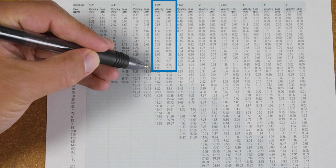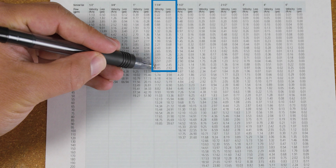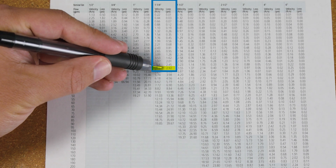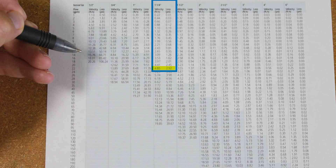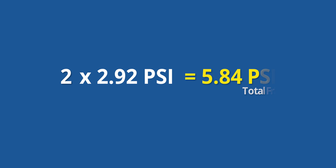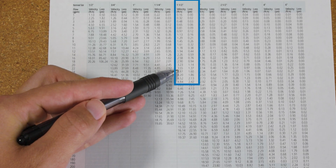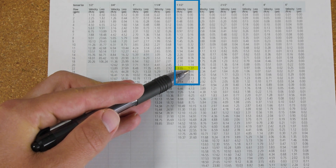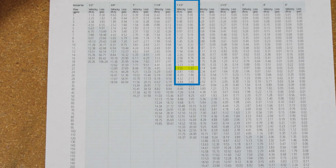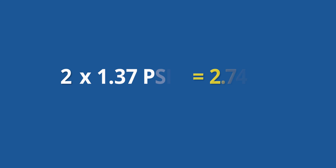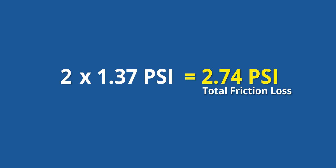For our sample system, the smallest pipe size we could use is one and one quarter inches — where the velocity is at 4.85 feet per second and the friction loss is 2.92 psi for every 100 feet of pipe. Our sample system uses 200 feet of pipe, meaning our total friction loss is 5.84 psi. If I want to minimize these further, I could bump it up to one and a half inch pipe, which would see a velocity of 3.55 feet per second and a friction loss of 1.37 psi per 100 feet, giving us a total of 2.74 psi friction loss for the 200 feet of pipe.